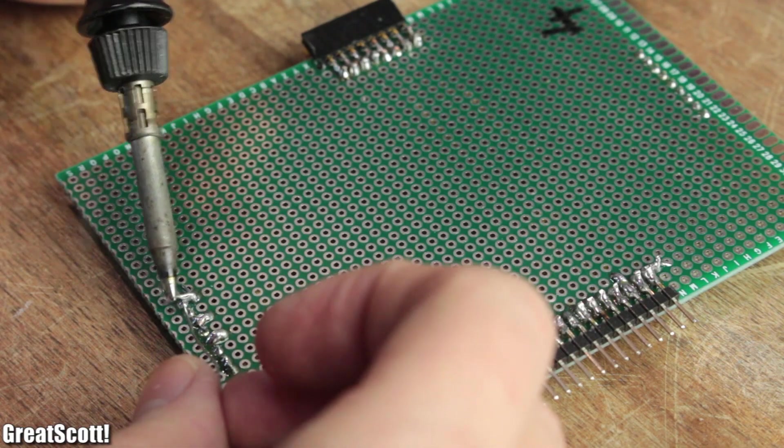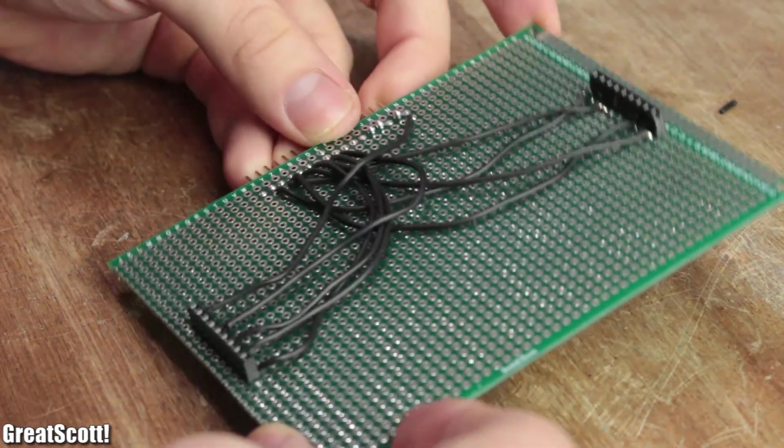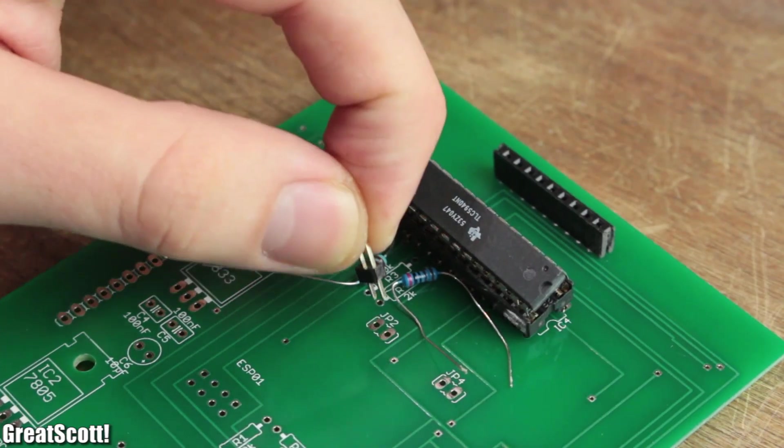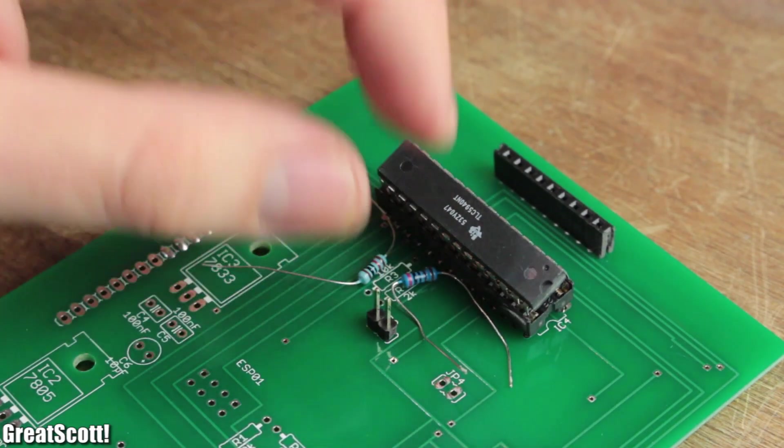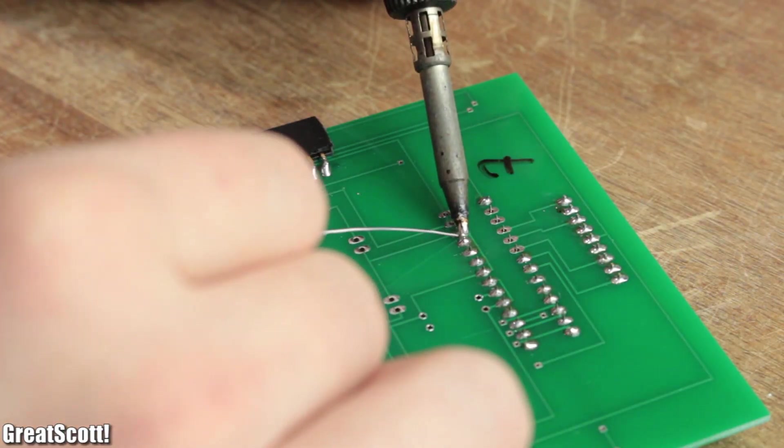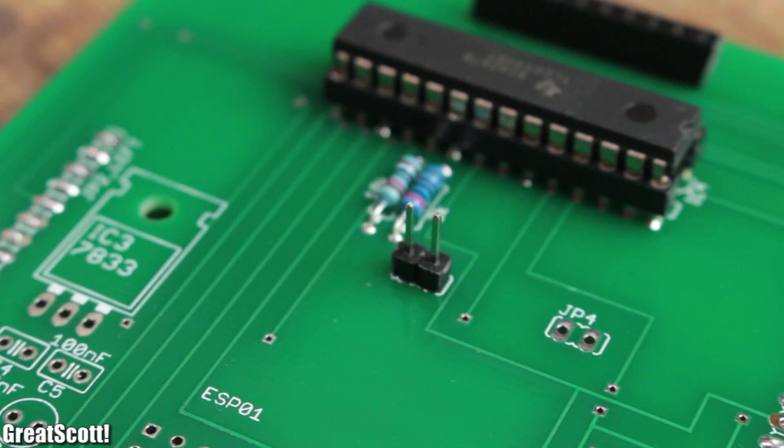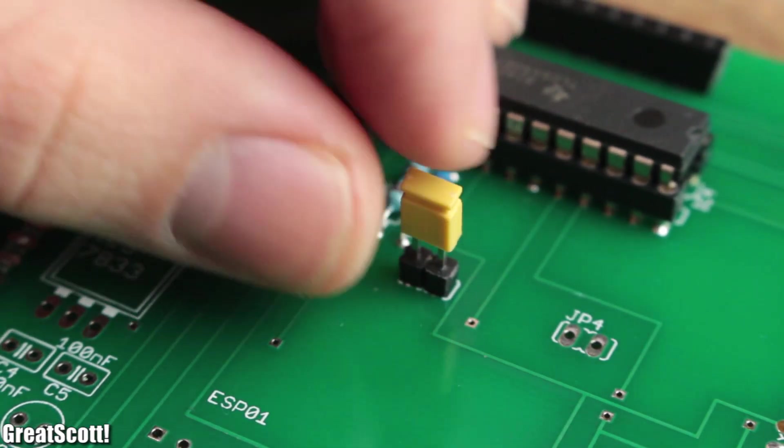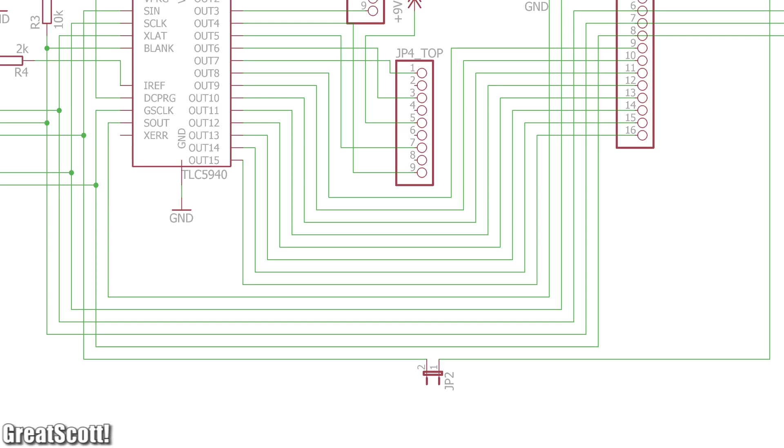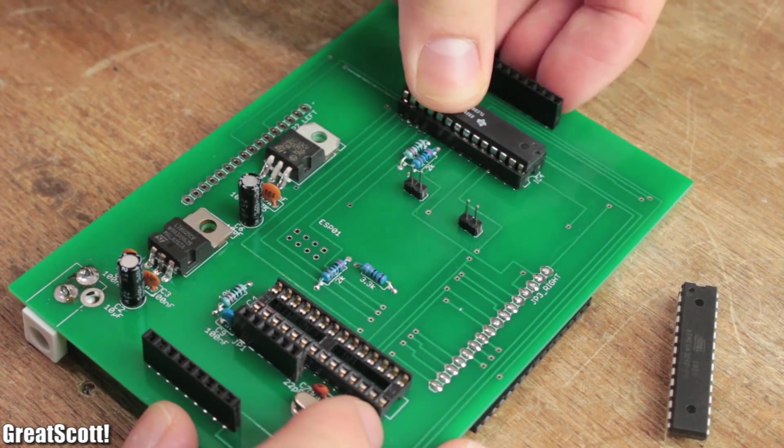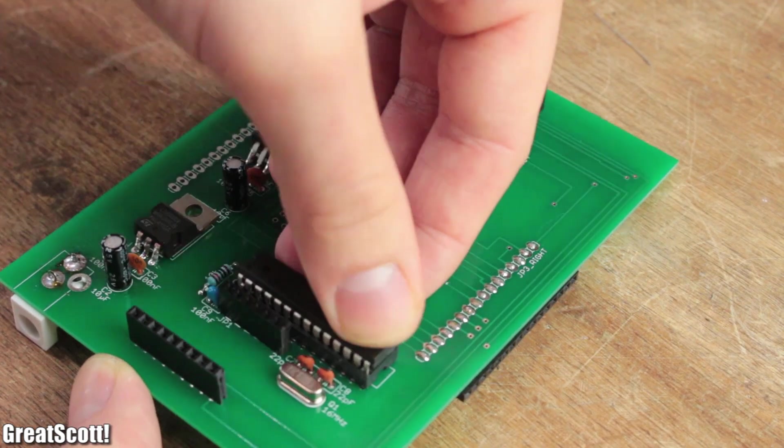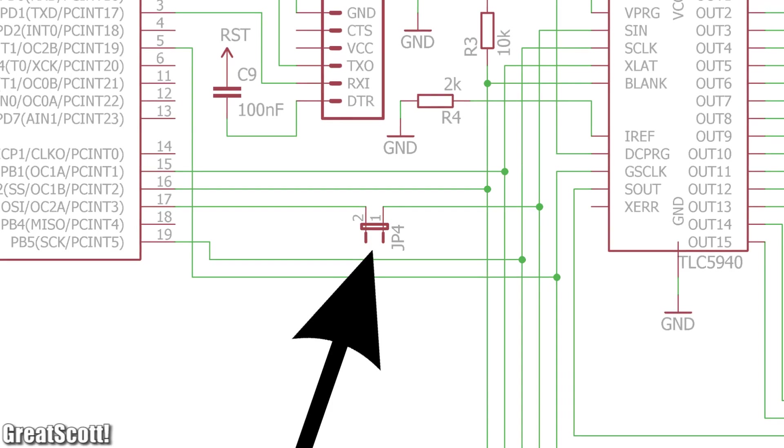Once the four perf boards were complete I started to solder a few necessary components for the three remaining TLC boards in place and finished those as well by pushing a jumper on the J2 interruption which allows the TLC to receive data from the previous TLC.